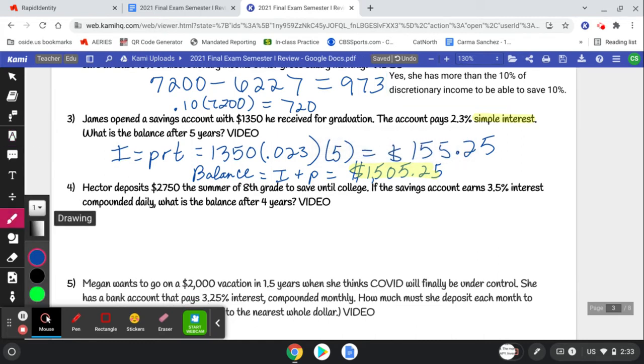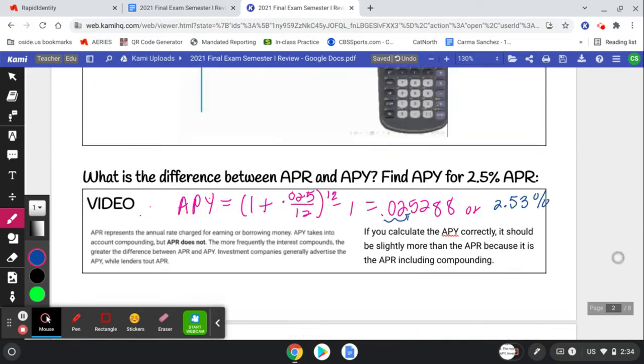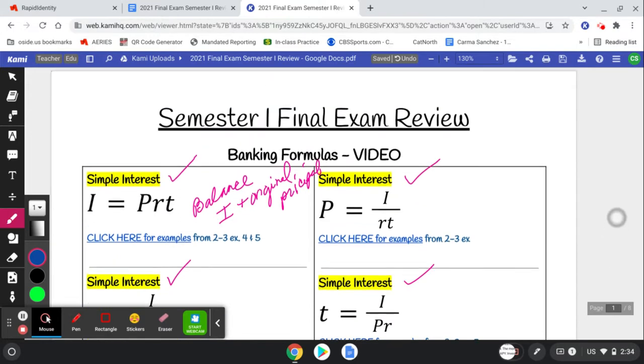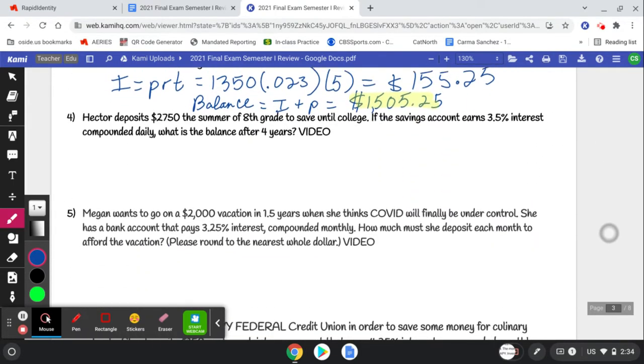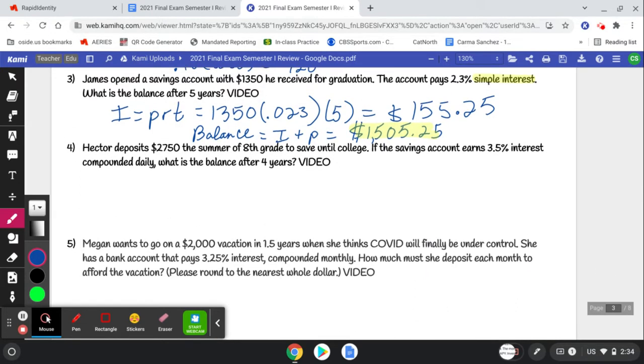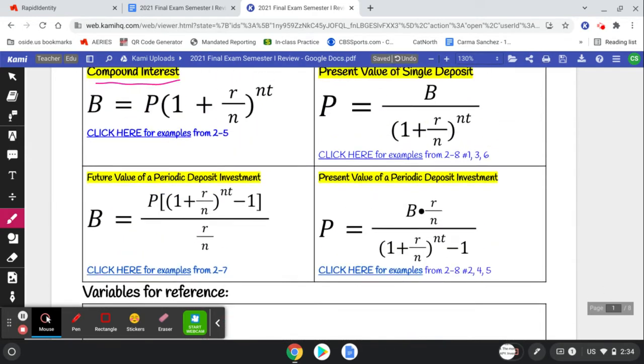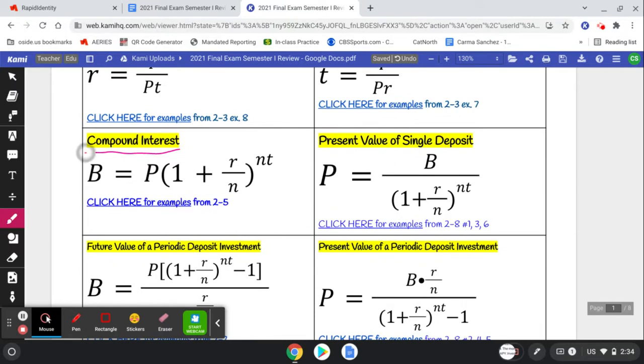Hector deposits $2750 the summer of eighth grade to save until college. If the savings account earns 3.5% interest compounded daily, what is the balance after four years? So now the top ones are the simple interest formulas. We're down here to compound interest. Principal times 1 plus the rate over N to the power of NT.